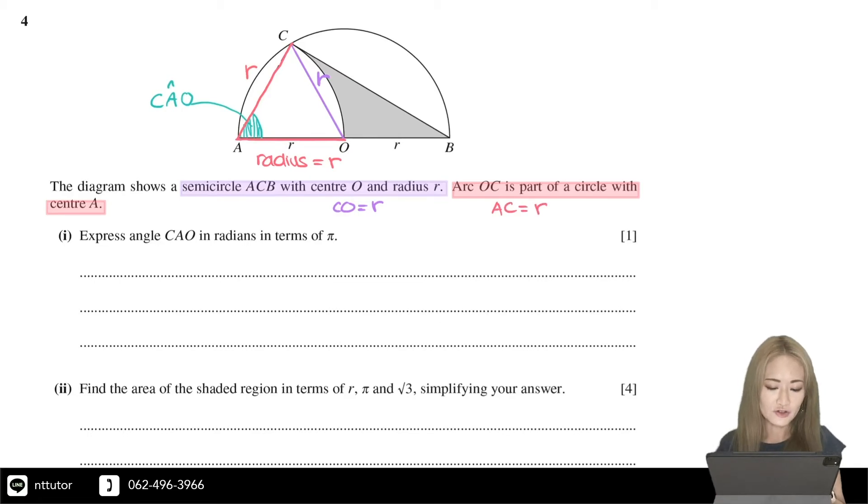So if you look at triangle CAO, this is an equilateral triangle because all the side lengths are the same.